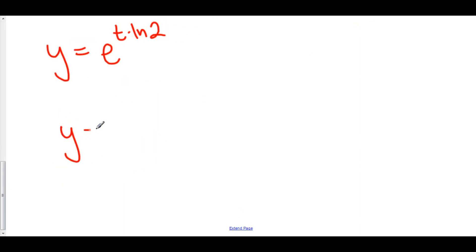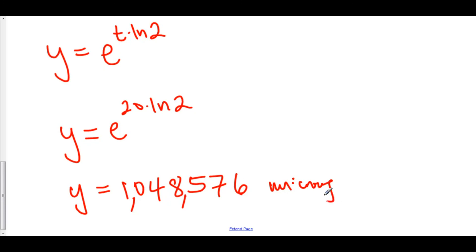So, here we have y is equal to e to the 20 times the natural log of 2. And if you do this on a calculator, you'll get y is equal to 1,048,576 microorganisms. And that right there is how many microorganisms there are after 20 minutes.